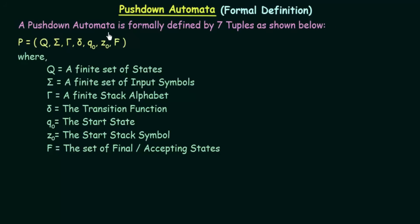A push down automata is formally defined by 7 tuples as shown below. If you remember, when we studied finite automata it was defined using 5 tuples, but in case of push down automata it is defined using 7 tuples. It is given by P equal to Q, sigma, uppercase gamma, delta, Q0, Z0, and F.